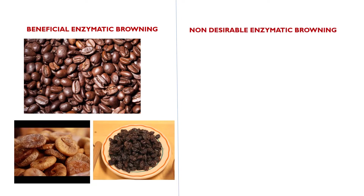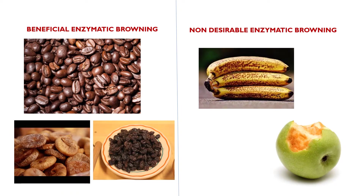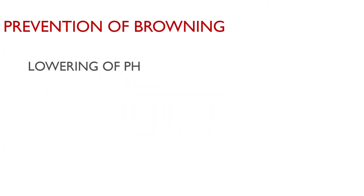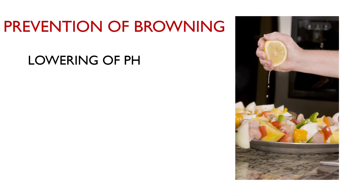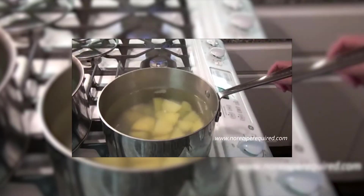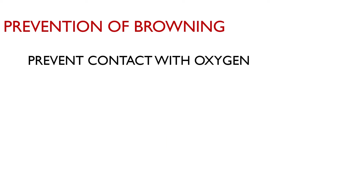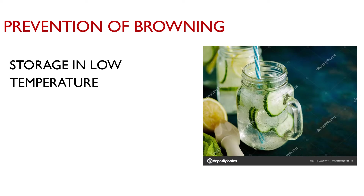Non-desirable enzymatic browning is seen as brown spots on the peel of bananas and other fruits and vegetables. Prevention or delay of enzymatic browning can be obtained by lowering the pH, blanching of foods to denature enzymes, using antioxidants, preventing contact with oxygen, and storage at low temperature.